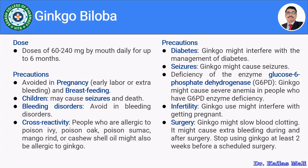Regarding cross-reactivity, patients who are allergic to poison ivy, poison oak, poison sumac, mango rind, or cashew shell oil might also be allergic to ginkgo. One should not take ginkgo if allergic. In the case of diabetes, ginkgo might interfere with blood sugar level management. In patients with seizures who are on antiepileptic medication, ginkgo should be avoided as it has a tendency to provoke seizures.